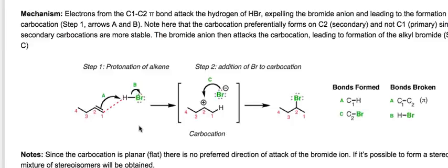The third arrow shows bromine attacking the carbocation on carbon-2 with a lone pair, simply forming a bond — carbon-2 to bromine — giving us our product. That is the sum total of all bonds formed and broken in this reaction.